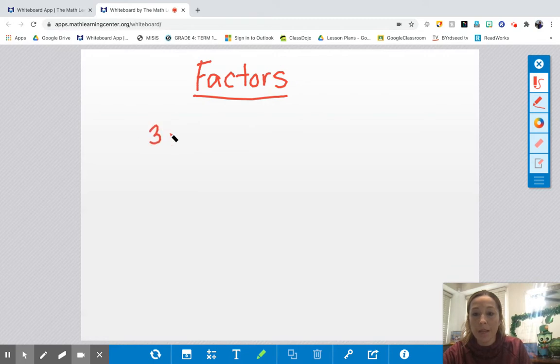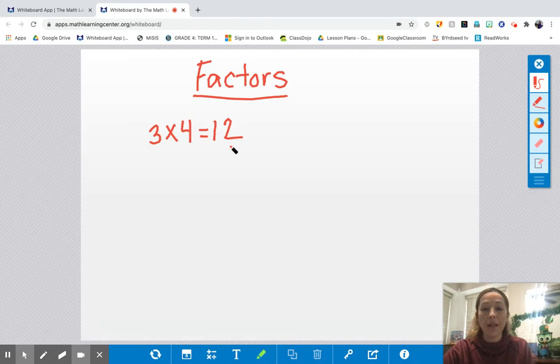Factors are the numbers that multiply together to make a whole number. So in this equation 3 and 4 are factors of 12 because you multiply 3 and 4 together to make 12. Same thing on our area model. Our factors are the width and the length and then our product is what's inside.